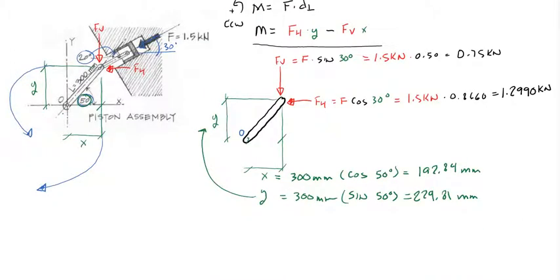So if we plug these values in, we get M is equal to Fh, 1.299 kilonewtons times 229.81 millimeters. And then we get Fv, which is 0.75 kilonewtons, and we multiply that by x, which is 192.84 millimeters.